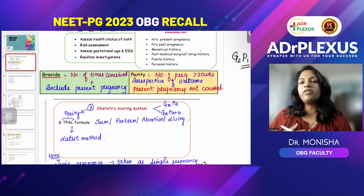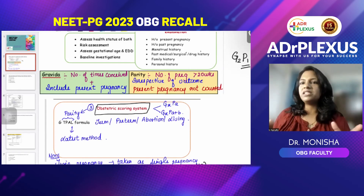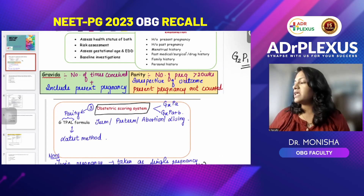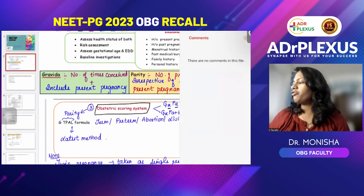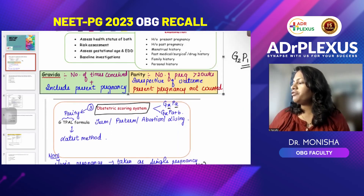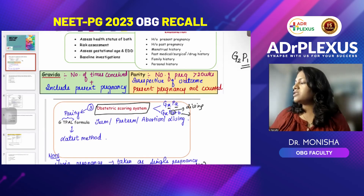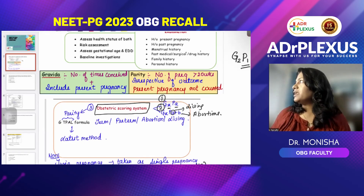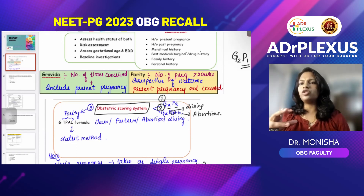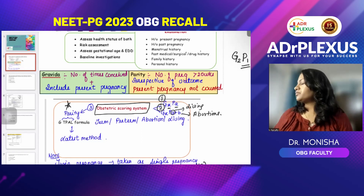Twin pregnancy is taken as a single pregnancy. The period of viability is 20 weeks according to WHO; in India it is 28 weeks. The obstetric scoring systems include: G×P (gravida × parity), GxP where A is number living and B is number of abortions, and the GT-PAL system — Gravida, Term, Preterm, Abortion, and Living — which is the latest method.